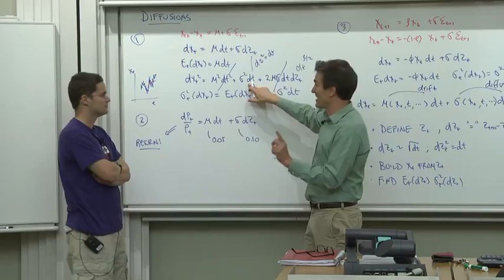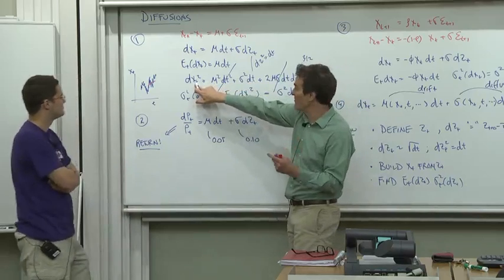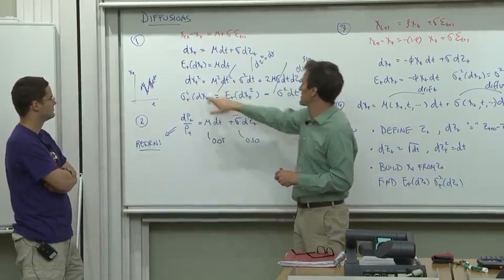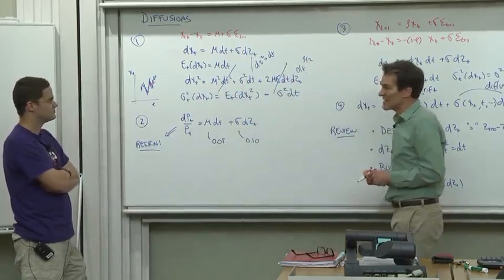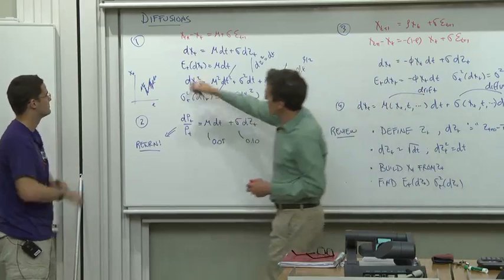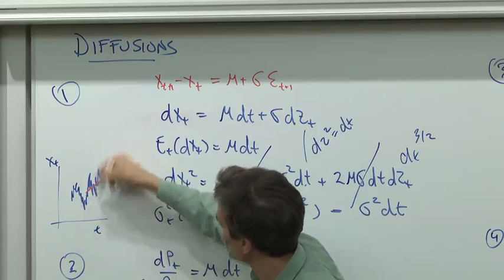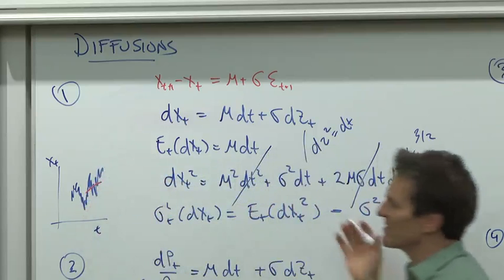That's just amazing. This thing looks like a random variable, but in fact it's of order dt. It's non-stochastic. So the variance of dx squared is just sigma squared dt. What's going on here is that the randomness of a diffusion at small time intervals is so much bigger than the mean that it's the same whether you take the mean out or not. Cool stuff, eh?